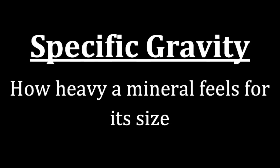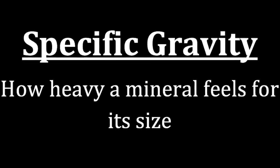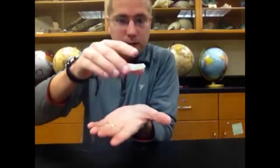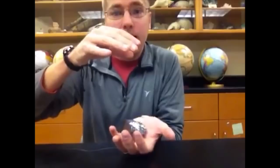The next special property is specific gravity, which is how heavy a mineral feels for its size. We have minerals that when you see them, you expect them to be a certain weight, and when you drop them into your hand, they feel exactly as you would expect. We have other minerals that look a little bit smaller and you'd expect to be lighter, but when you drop them, they're actually much heavier when they hit your hand. That's called a high specific gravity, meaning its weight for its size or its density is very high.